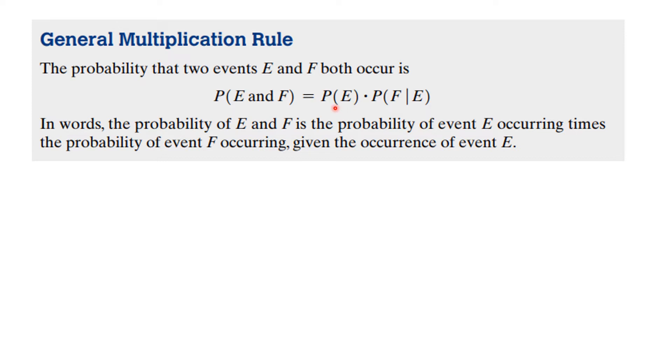So if I multiply both sides by the probability of E, that non-zero probability, then I know that the general way to compute a probability of E and F is the probability of E times the probability of F given E.